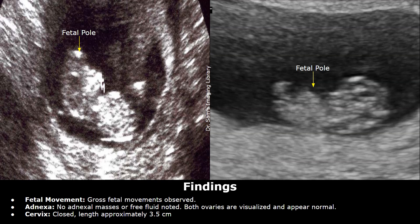Finally, we can write about the adnexa, the cervix, and cervical length. Adnexa: no adnexal masses or free fluid noted. Both ovaries are visualized and appear normal. You can also write the sizes of the ovaries here. Cervix: closed. Length approximately 3.5 cm, which is normal.